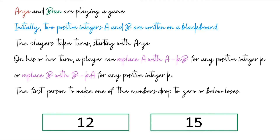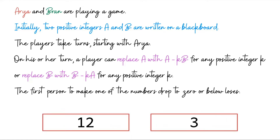Now it's Bran's turn. He can't subtract copies of 15 from 12 without immediately losing, and subtracting more than one copy of 12 from 15 also loses immediately. The only valid move to stay in the game is to subtract one copy of 12 from 15, leaving the configuration 12, 3, which is passed to Arya.